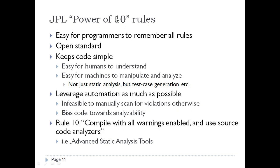Power of 10 is easy for programmers to remember — unlike 228 or more rules. Being open means you know what is inside. It keeps code simple, easy for humans to understand and for machines to analyze, supporting not just static analysis but also test case generation. It emphasizes leveraging automation as much as possible, biasing code towards analyzability — with rule 10 being: compile with all warnings enabled and use source code analyzers.